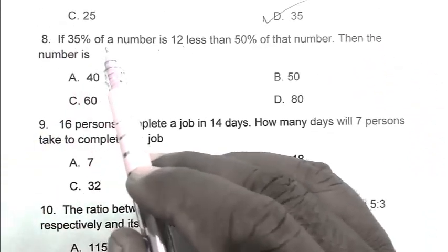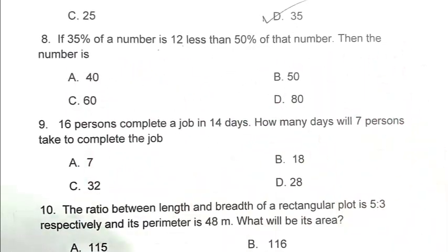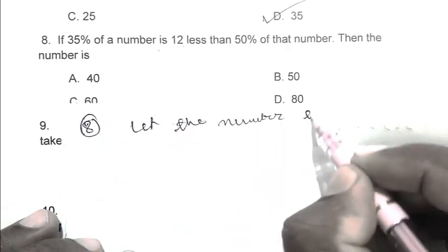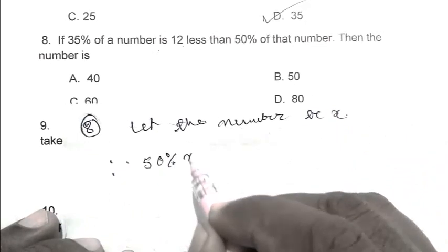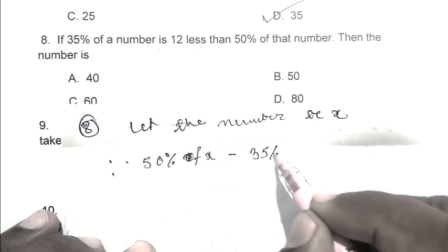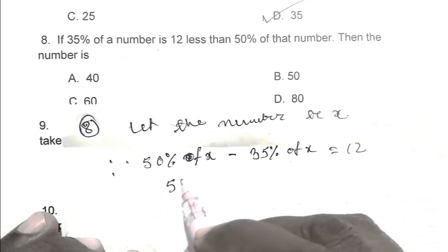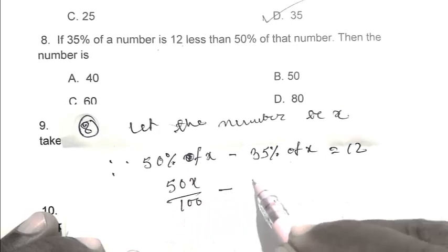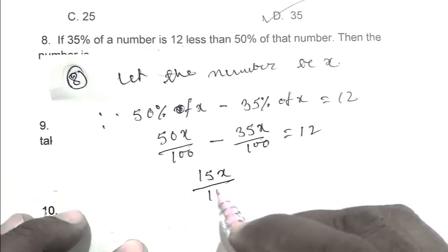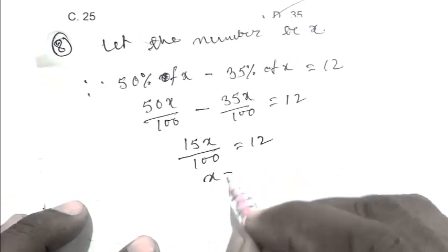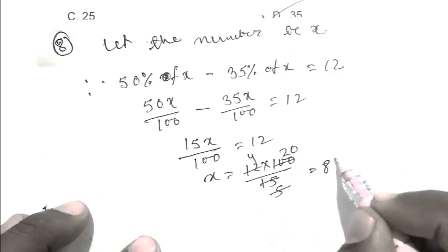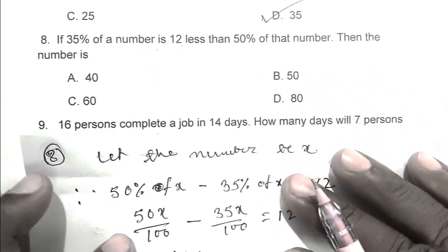Question number 8. If 35 percent of a number is 12 less than 50 percent of that number, then the number is? So friend, let the number be x. Then 50% of x minus 35% of x equals 12. That is 50x/100 minus 35x/100 equals 12, giving 15x/100 equals 12, so x equals 80. D is the right answer.